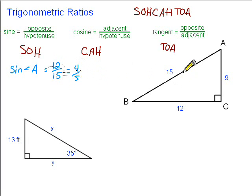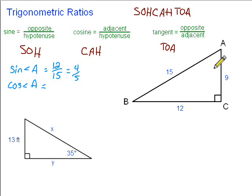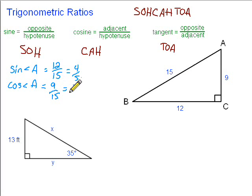Now, what if we want the cosine of angle A? Cosine is the adjacent side over the hypotenuse. The side adjacent to angle A is 9, so we'd have 9 on top. The hypotenuse is still 15, the one opposite the right angle. Again, we can simplify — it would be 3 fifths.